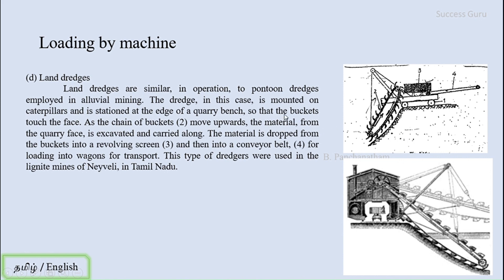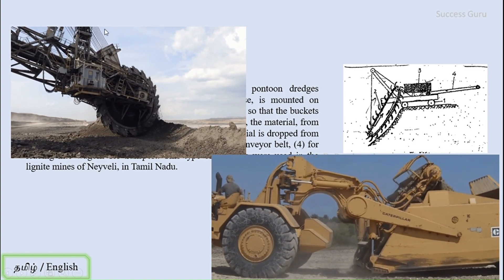The bucket touches the quarry face as the chain bucket moves upward, so the material from the quarry face is excavated and carried up. The material is then dropped from the bucket into revolving screen number three, and then onto a conveyor belt. The material is separated in the revolving screen and the required size of metal is transported by the conveyor belt for loading into a wagon for transport.